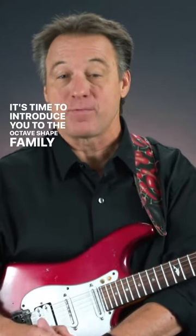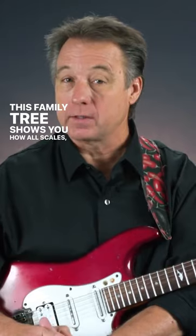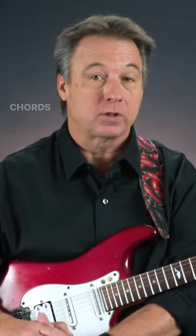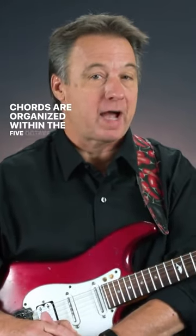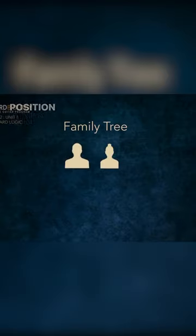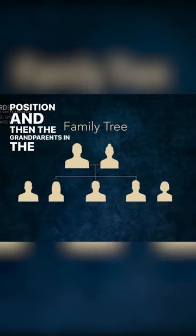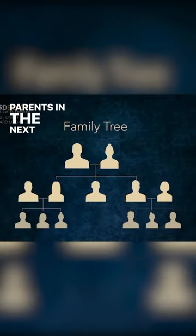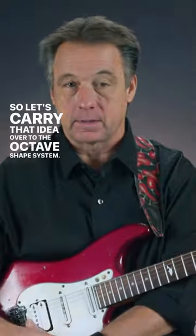It's time to introduce you to the octave shape family tree. This family tree shows you how all scales, arpeggios, and chords are organized within the five octave shapes. Imagine a family tree with great-grandparents in the top position, then the grandparents in the next tier, then the parents in the next tier, and the current generation at the bottom. So let's carry that idea over to the octave shape system.